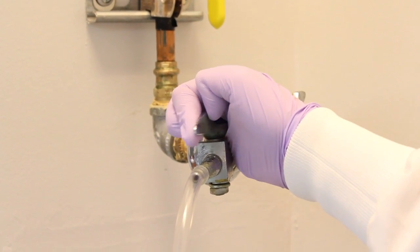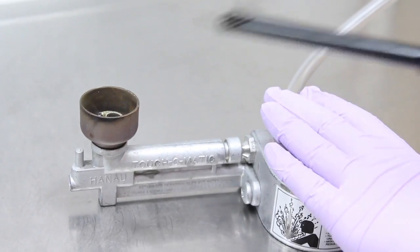Light the Bunsen burner for the flame sterilization of your tweezers. The gas valves are located in the corner of the room.